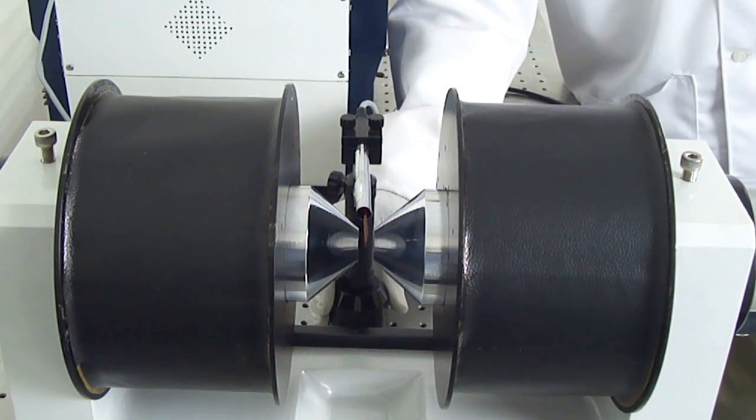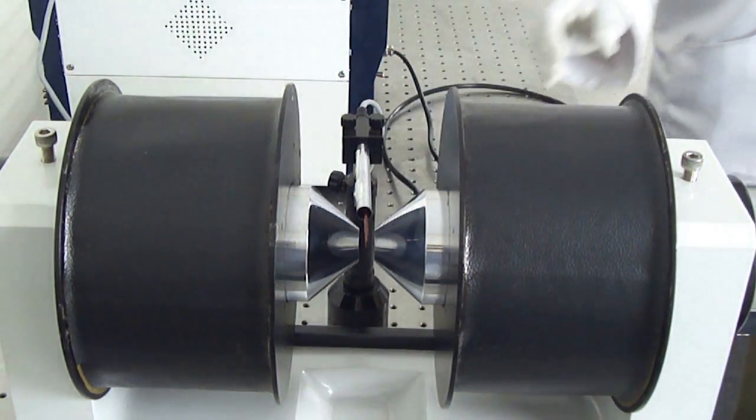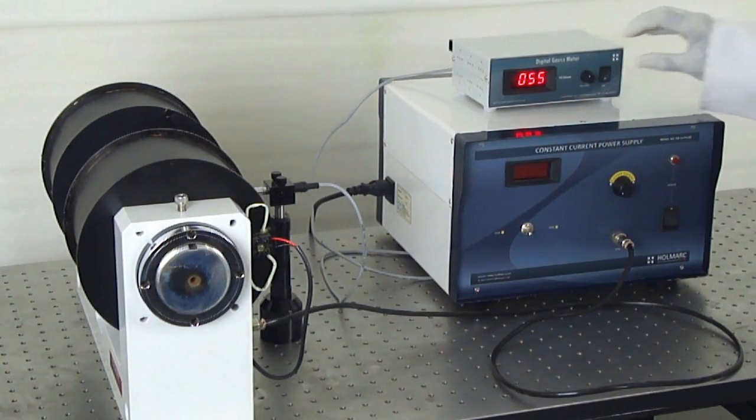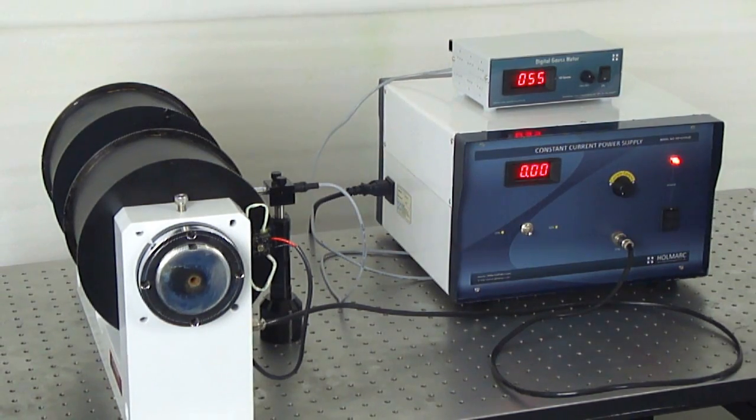A basic experiment using this equipment is the calibration of magnetic field. This unit comes with a constant current power supply and a Gauss meter for this purpose.